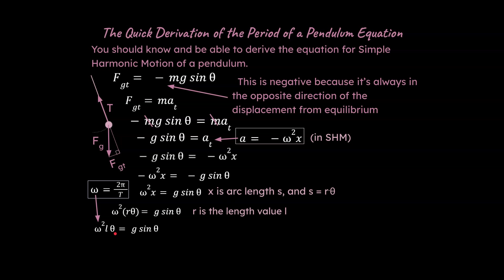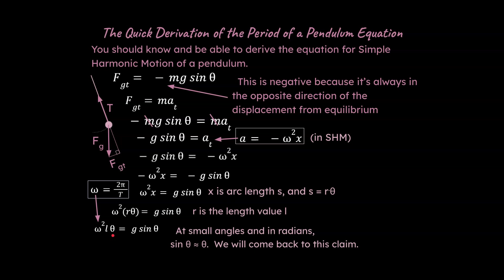At small angles — say under 15 degrees — an angle in radians and the sine of that angle in radians are basically the same. They're not exactly the same, but they're close enough that you can approximate them as equal. This is crucial for our derivation and does come up in problems from time to time. Using the small angle approximation, if θ ≈ sinθ, then we can cancel them out algebraically, and we're left with a simplified equation.